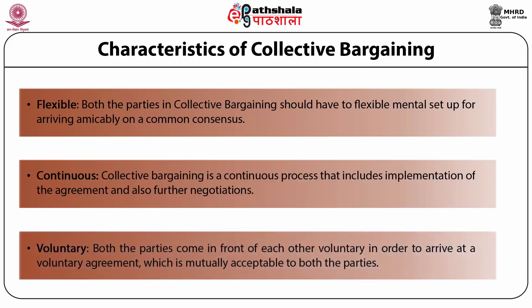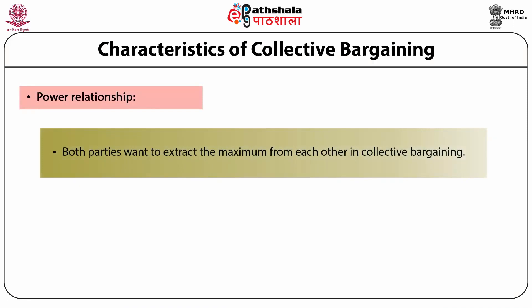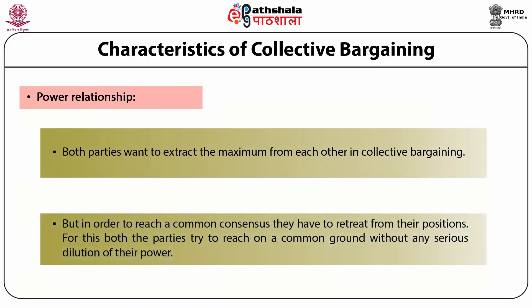Seventh, voluntary. Both the parties come together voluntarily in order to arrive at a voluntary agreement which is mutually acceptable to both parties. And eighth, power relationship. Both parties want to extract the maximum from each other in collective bargaining, but in order to reach a common consensus, they have to retreat from their positions. For this, both parties try to reach common ground without any serious dilution of their power.